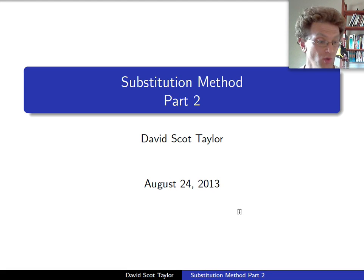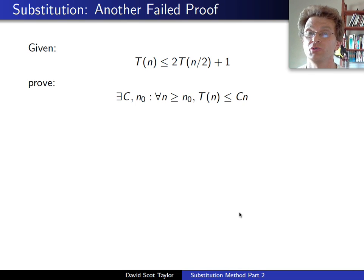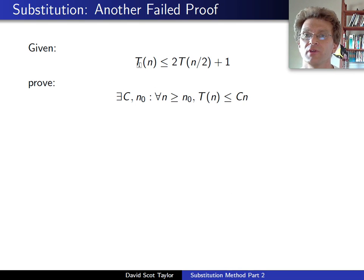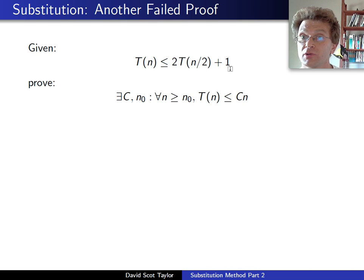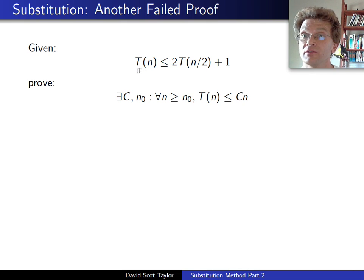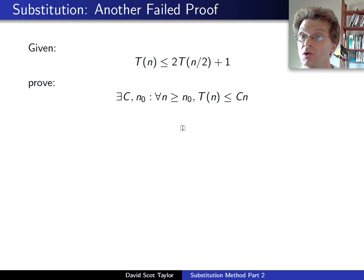Continuing on from our talk last time, back to substitution, we're going to go with another failed proof. In this case, I'm going to start with t(n) ≤ 2·t(n/2) + 1. I'm going to try to prove that for this recurrence relation, t(n) is linear — t(n) is O(n) — that is, t(n) ≤ c·n for some constant c and sufficiently large n.